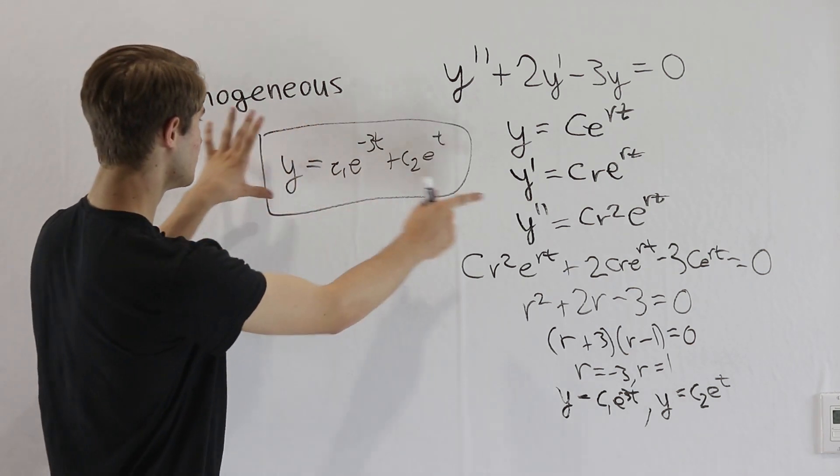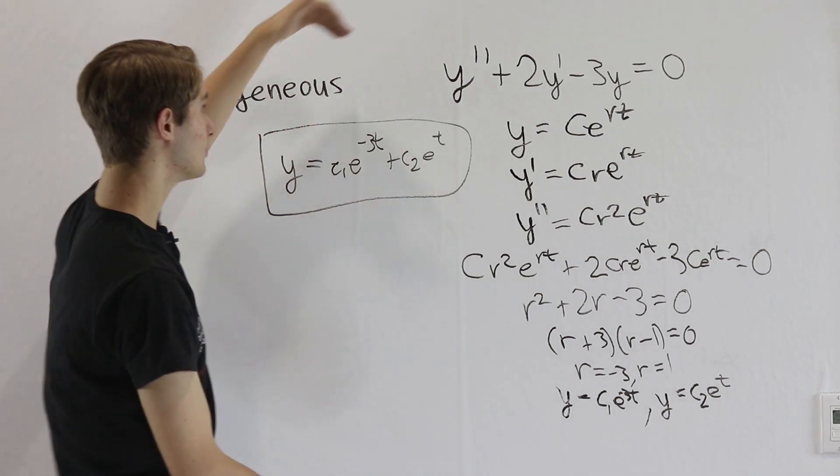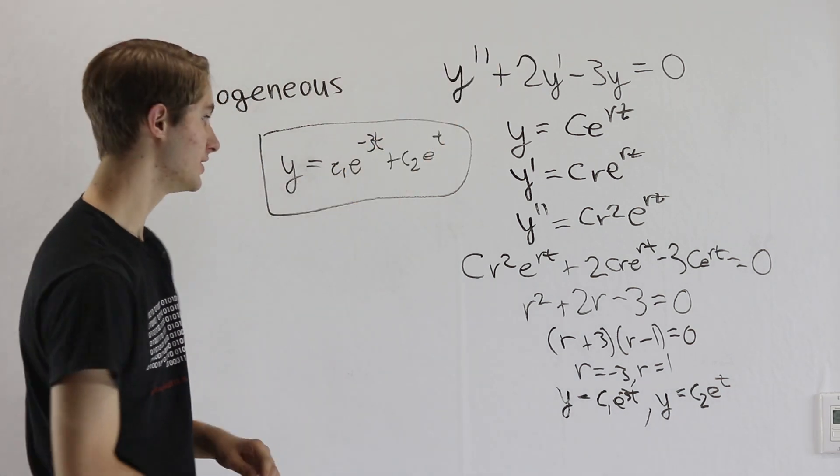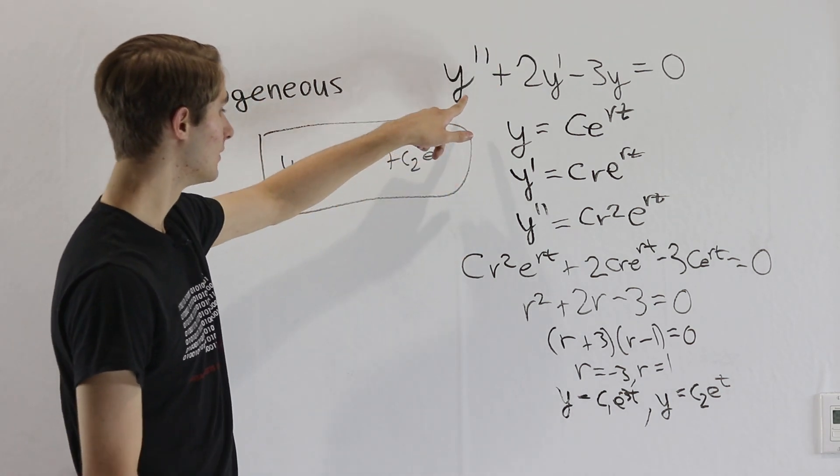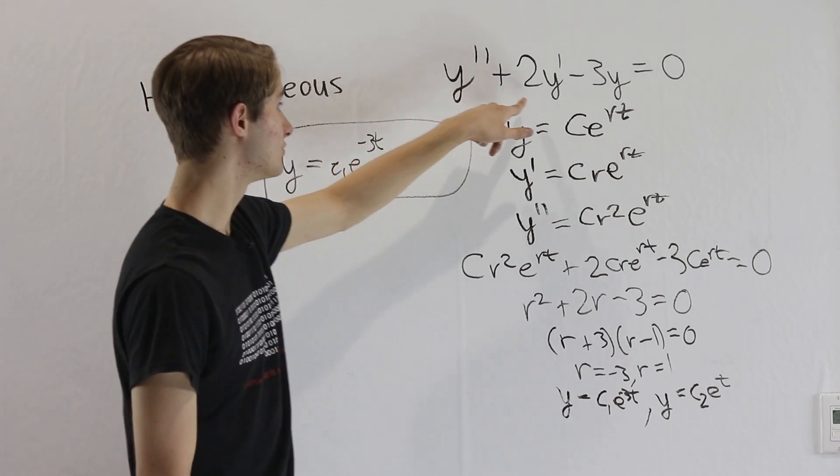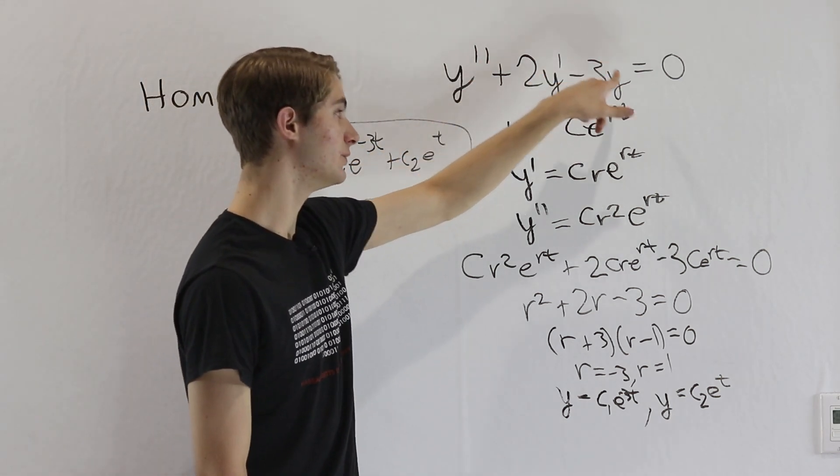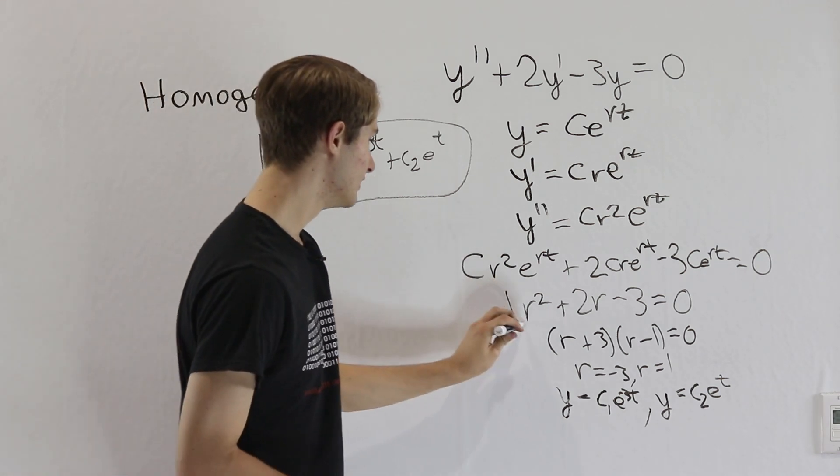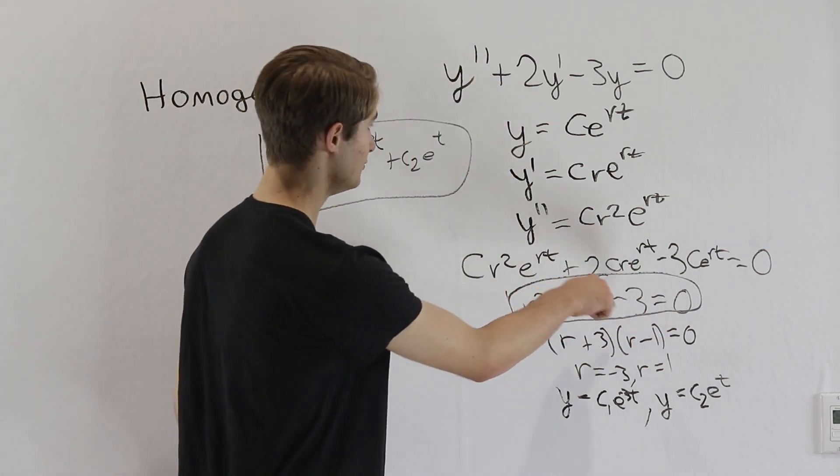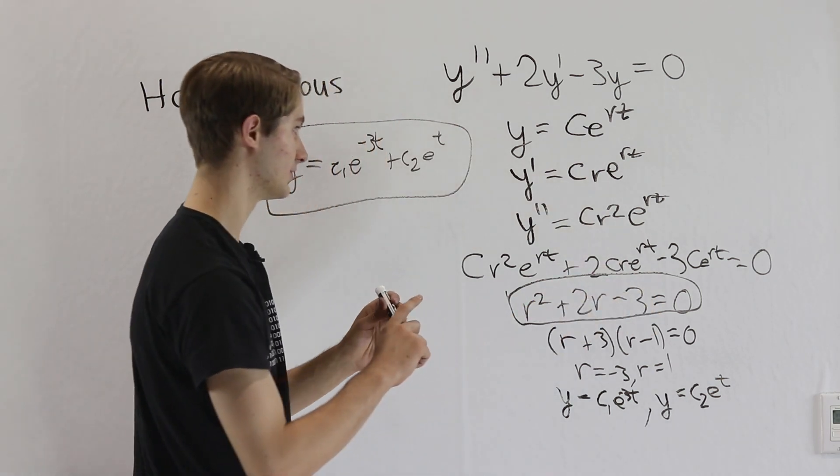But in general, any function that has this form right here is going to be a solution to our differential equation. Now notice, when we started out, we had the differential equation y double prime plus 2y prime minus 3y equals zero. And what we got from that is this right here, r squared plus 2r minus 3 equals zero.